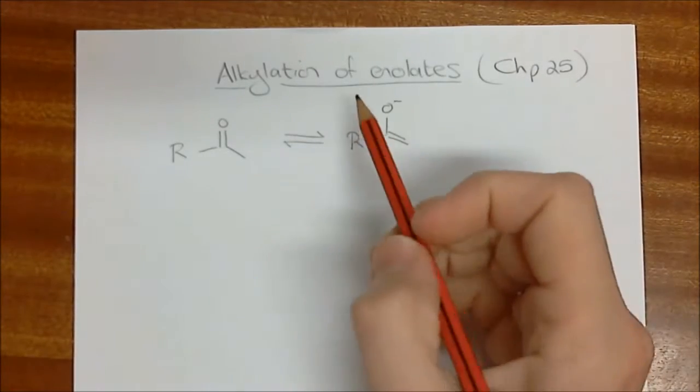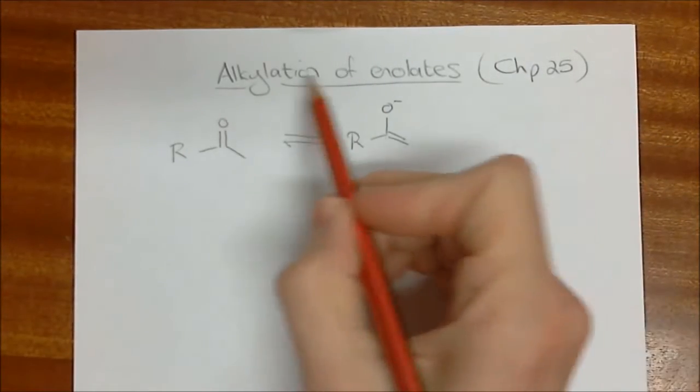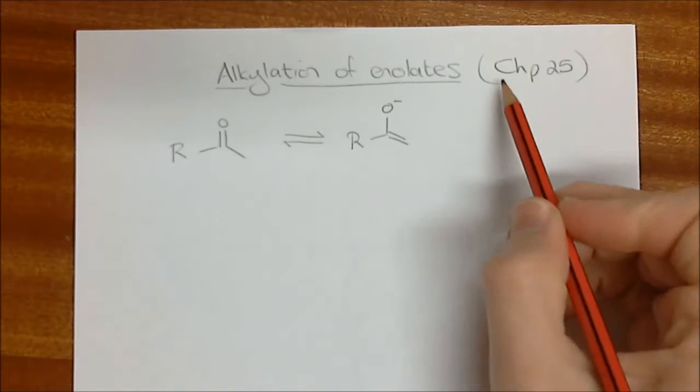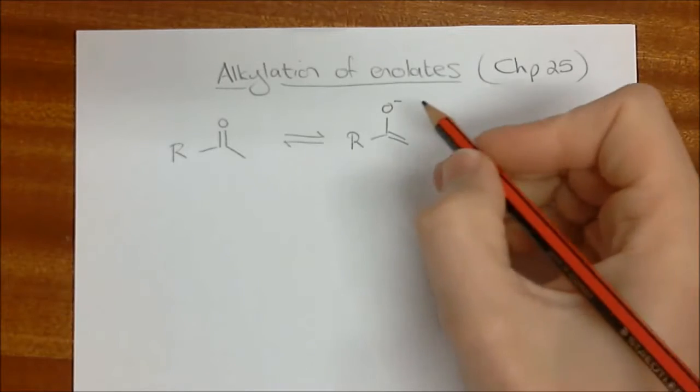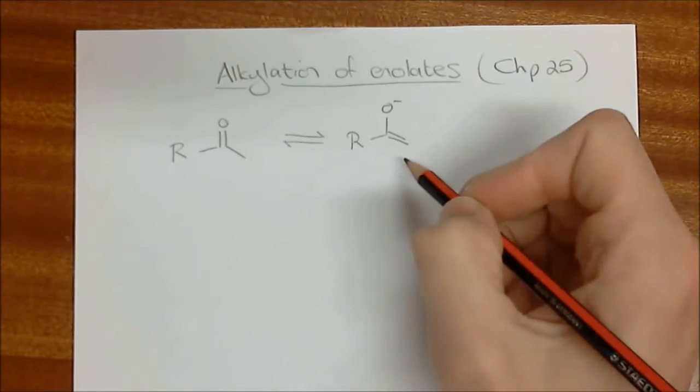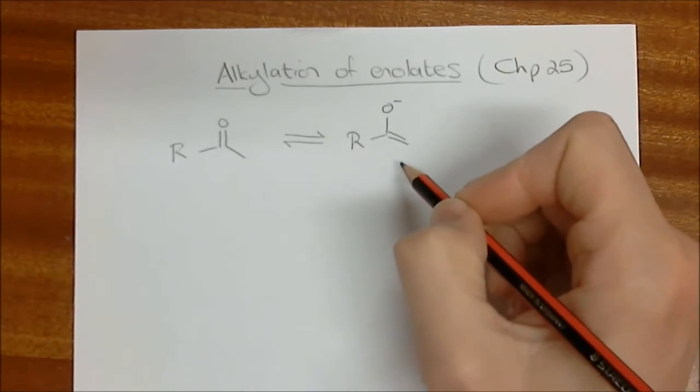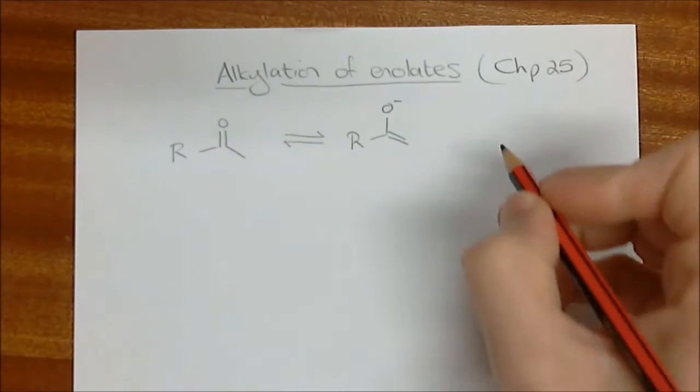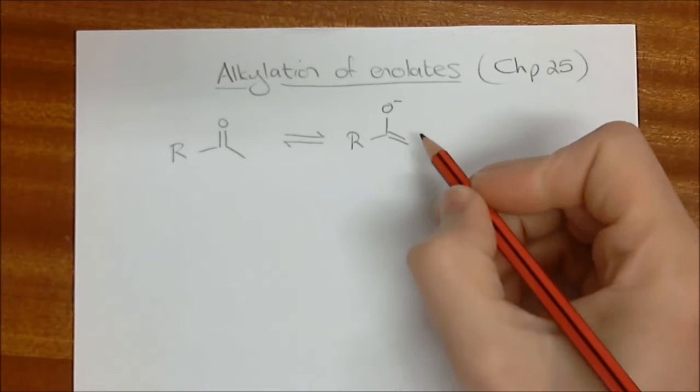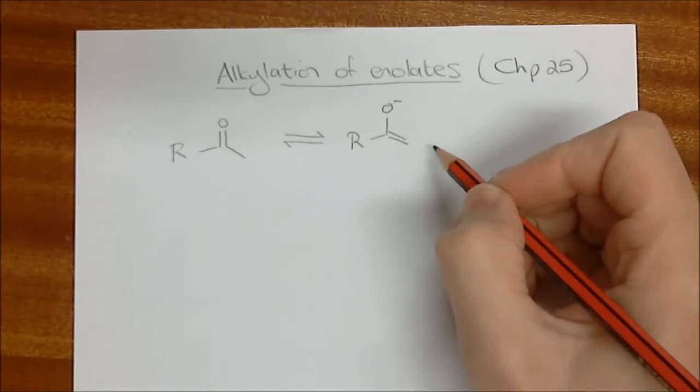It's time now for us to start looking at the principle of alkylating enolates, and this is the beginning of chapter 25 in your textbook. The importance of this is now that we've considered what an enolate is and the various ways that we can generate enolates, we're now going to look at simple carbon-carbon bond formation using the enolate as a nucleophile.